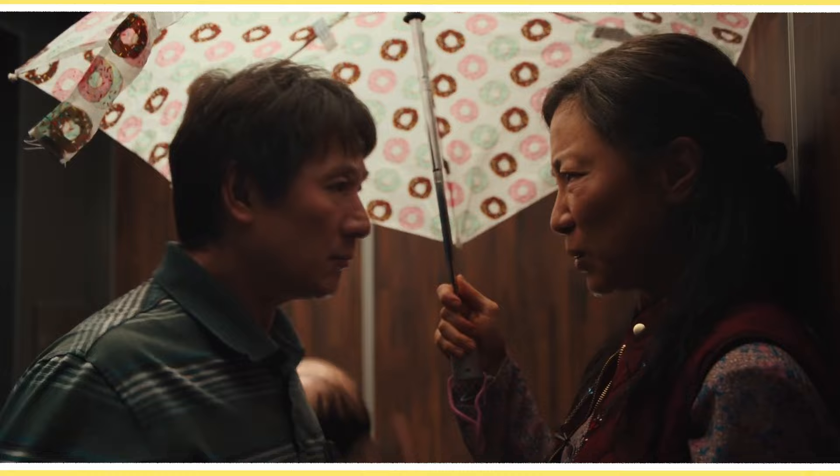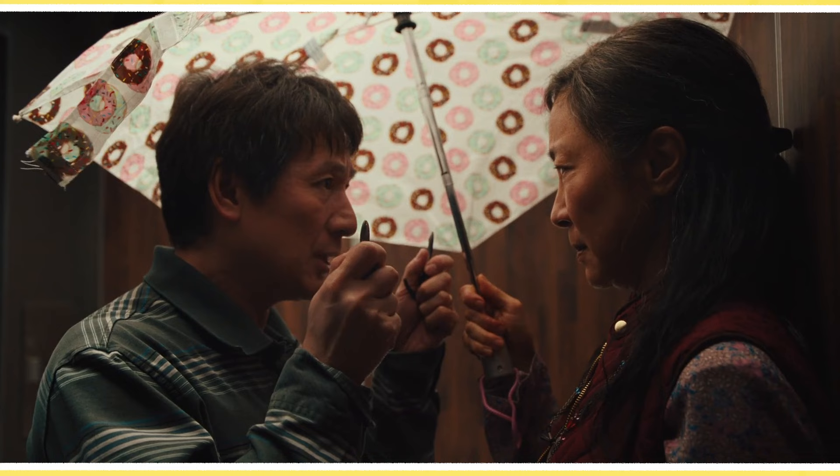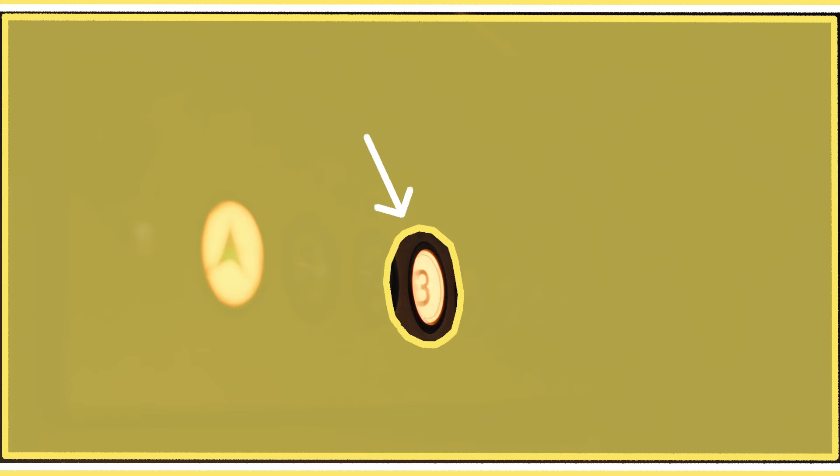A variation of this cut is called an insert. This cut shows a close up of a specific detail or object within a scene. It's usually a brief shot that is inserted into the sequence to provide a visual emphasis or to provide additional information to the audience. It's a way for the editor to say: this thing is important.